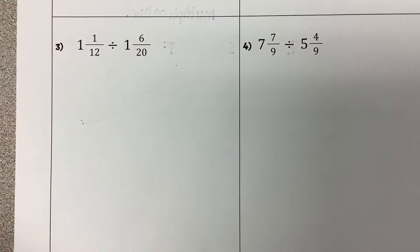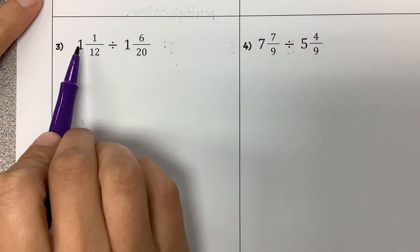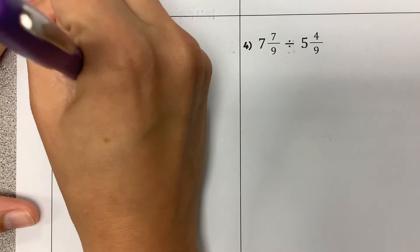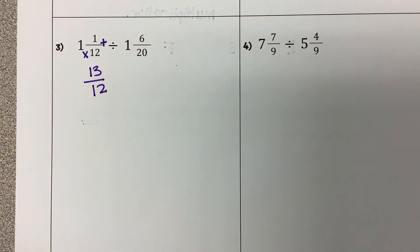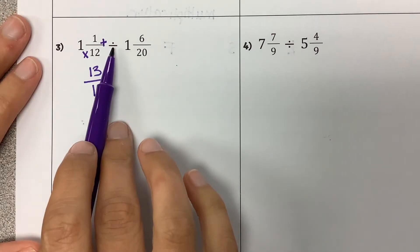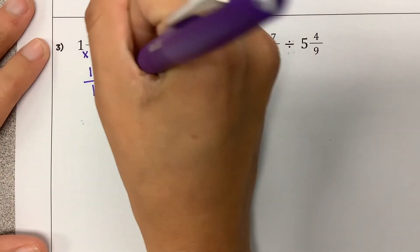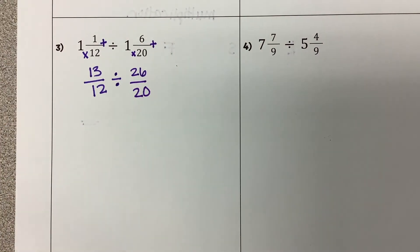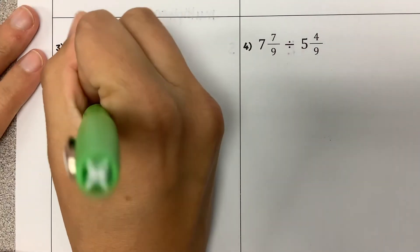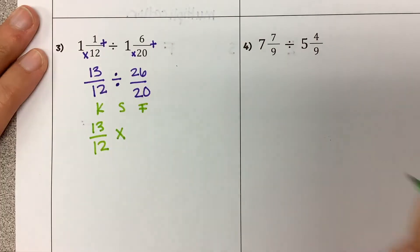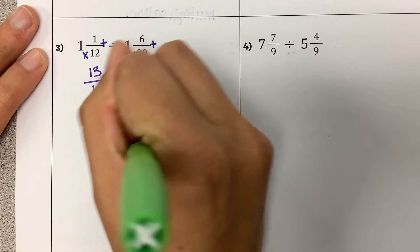The next two problems involve mixed numbers, so we have to do that first step of converting to improper fractions. For the first one: 1 times 12 is 12, and 12 plus 1 is 13 over 12. I'm not trying to skip steps, so I'm still writing the division sign — all I'm doing is rewriting these numbers. For the second: 1 times 20 is 20, and 20 plus 6 is 26 over 20. Now I can Keep it, Switch it, Flip it — keeping 13 over 12, switching to multiplication, and flipping 26 over 20 to 20 over 26.